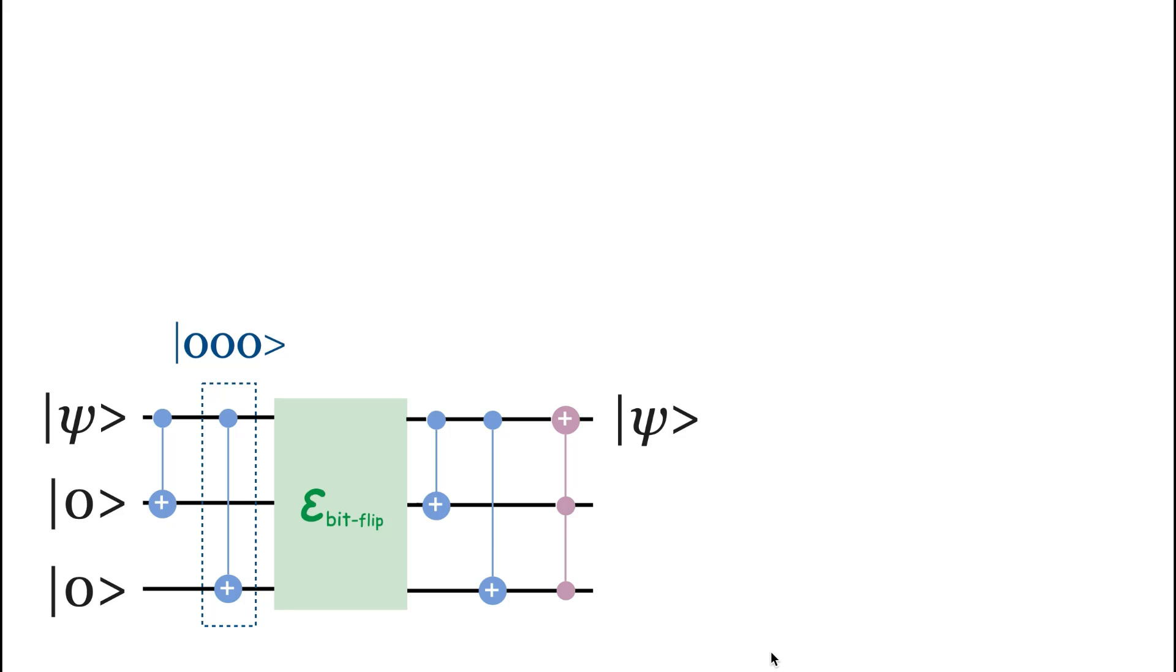The CNOT gates are applied to the ancillary qubits again, and then the Toffoli gate is applied to the first qubit, which will correct its state.